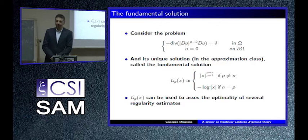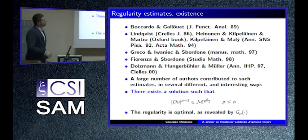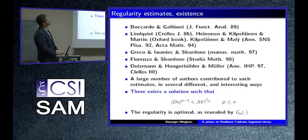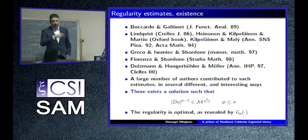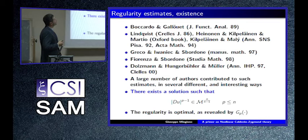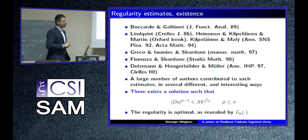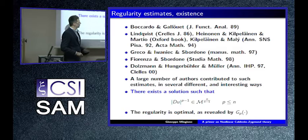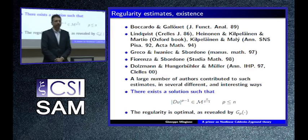In conclusion, this can be used to test the optimality of your results. There is a long list of people who contributed to this problem, initially from the English school, proving in particular fantastic estimates — so-called potential estimates — that I'm going to talk about later. The best integrability result is what you expect: if you take |Du|^{p-1} then this belongs to Marcinkiewicz M^{n/(n-1)}, and this is essentially the type of integrability satisfied by the nonlinear Green's function and is therefore optimal.